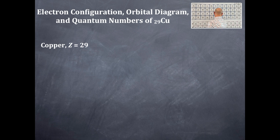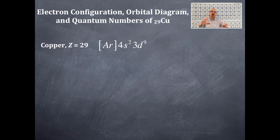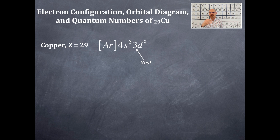We're going to use the periodic table to get to our 29. We'll use the noble gas notation for copper, which is argon in brackets, 4s2, 3d9. Note that this is most certainly a 3d — the d's are always one level less than the period.